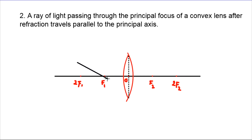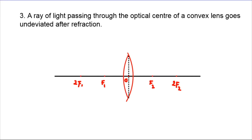The ray passing through the principal focus, after refraction, emerges parallel to the principal axis. A ray of light passing through the optical center of a convex lens goes undeviated after refraction.